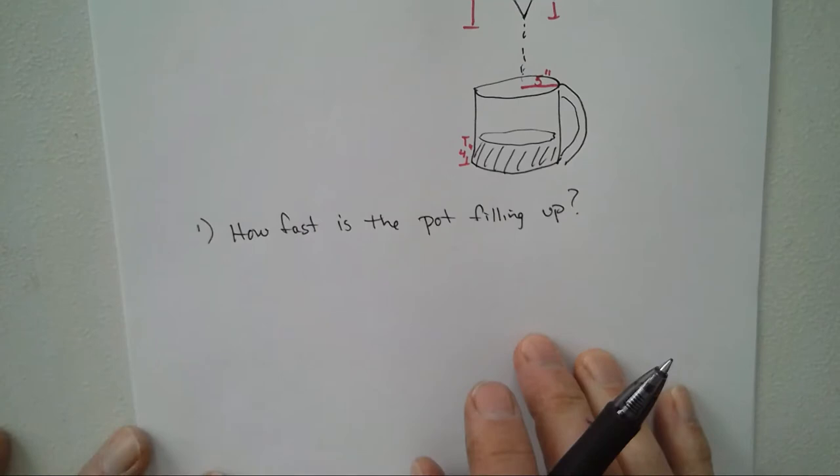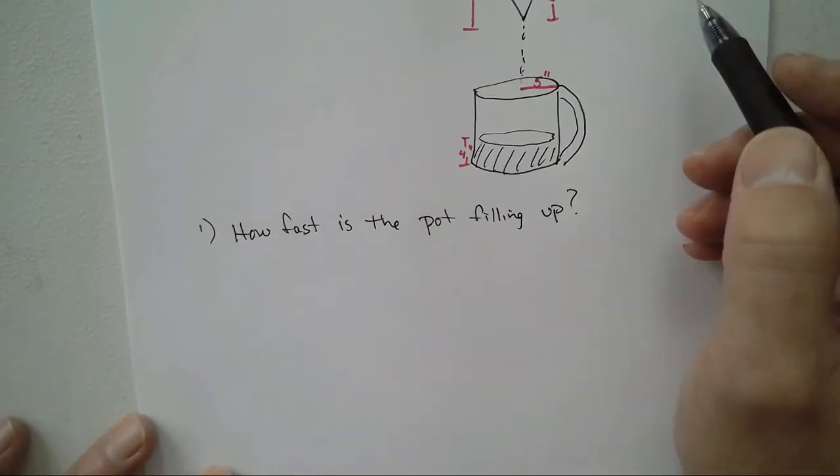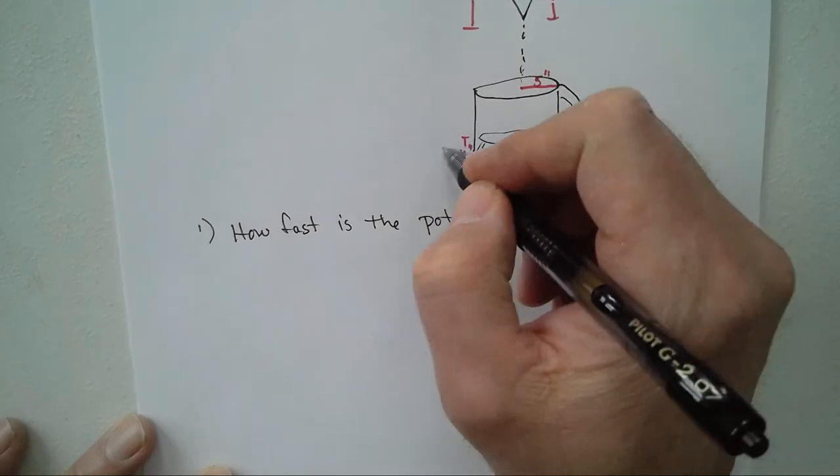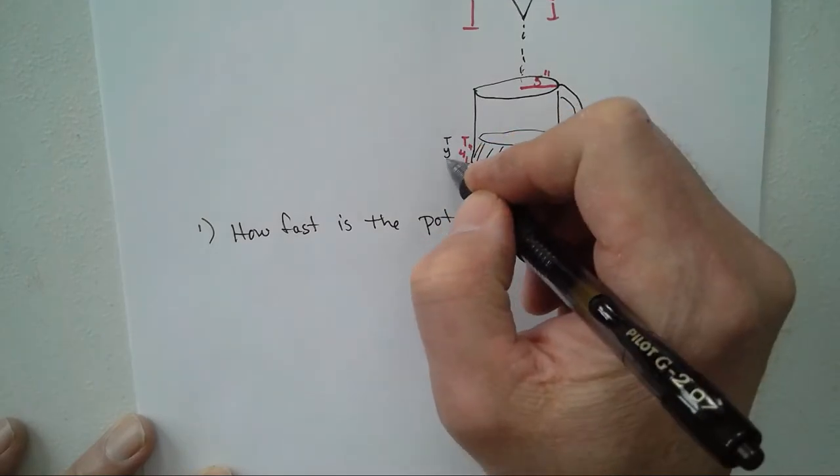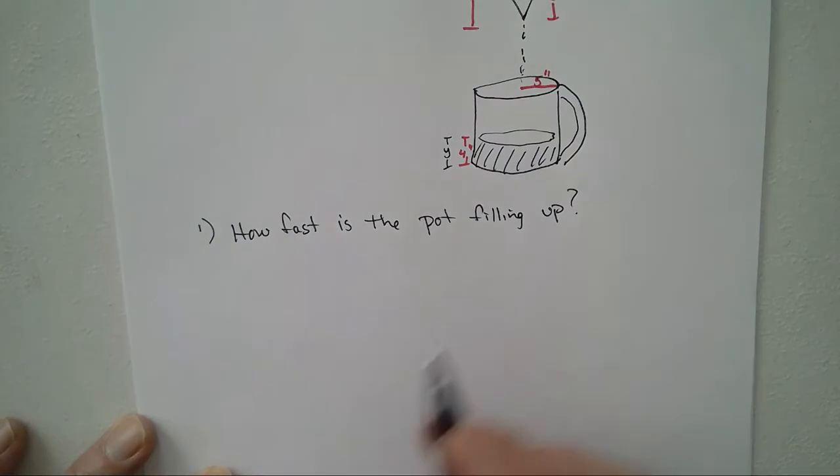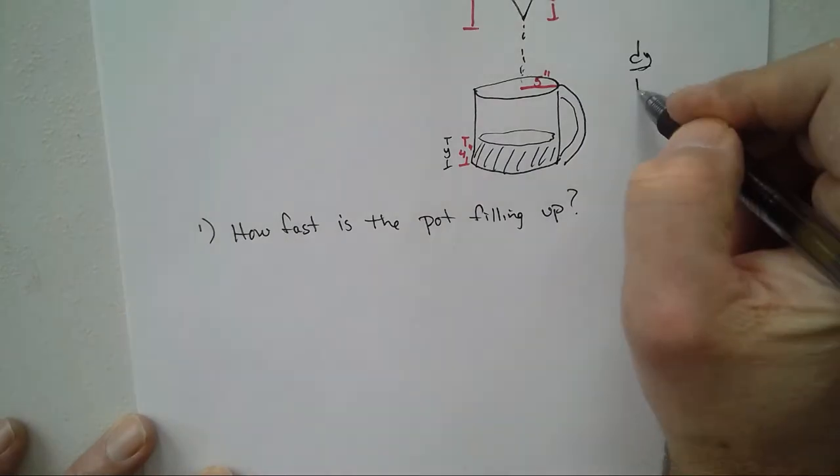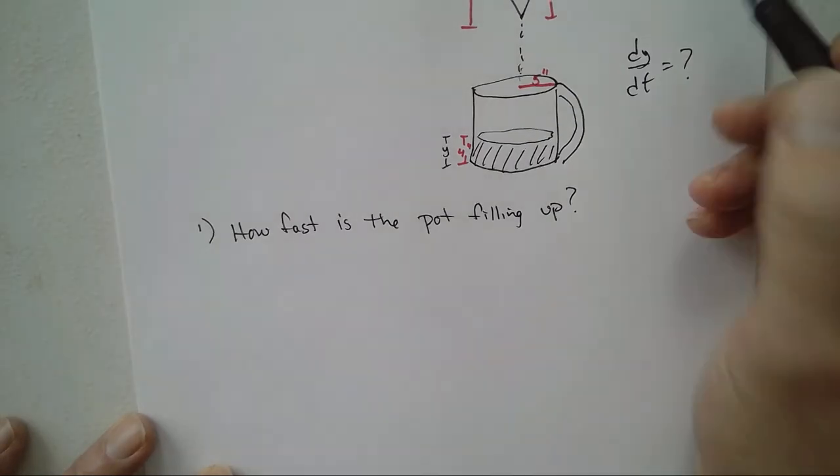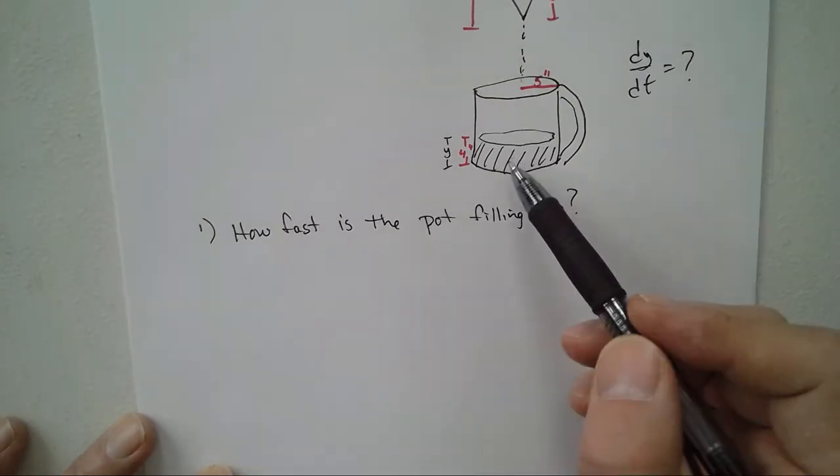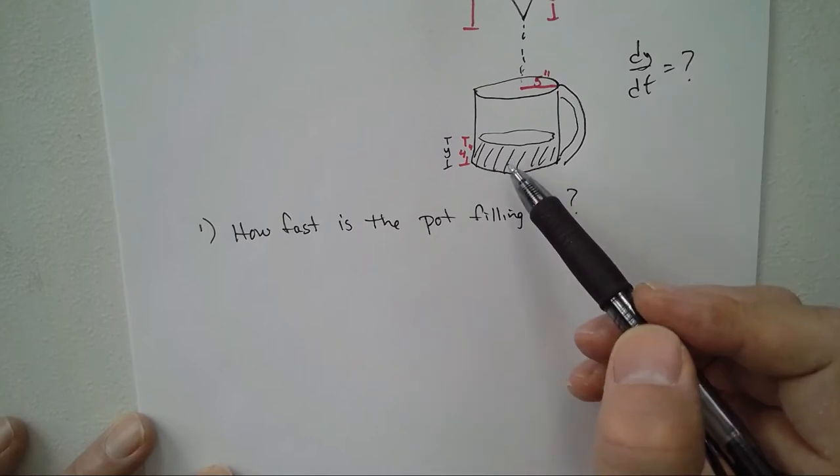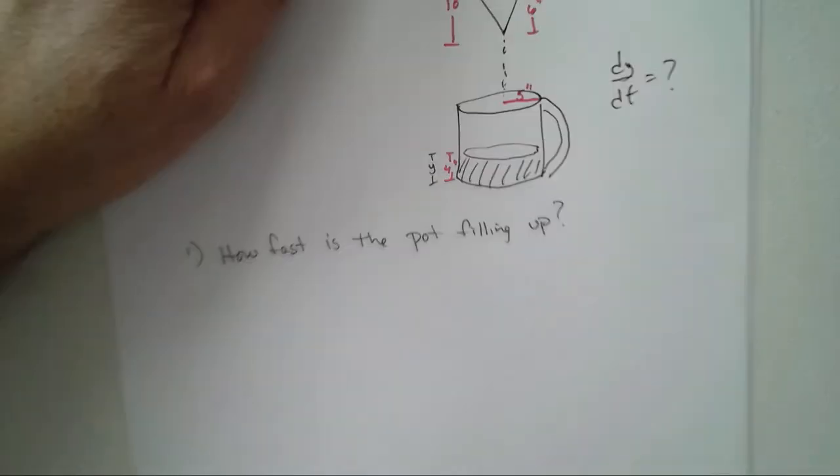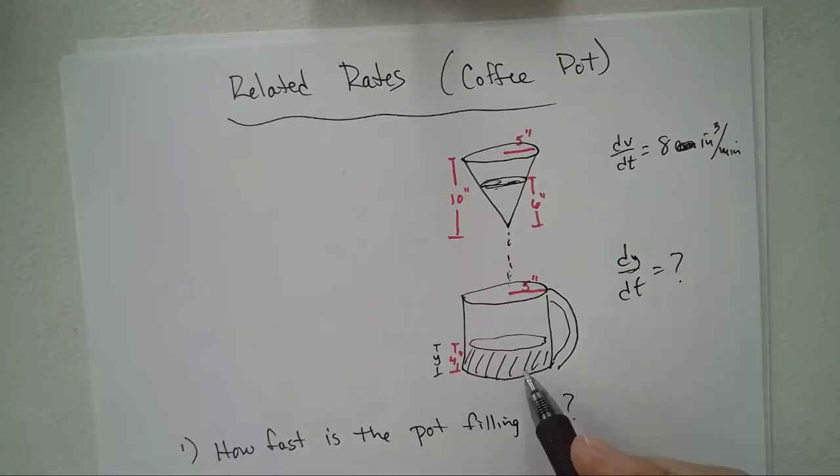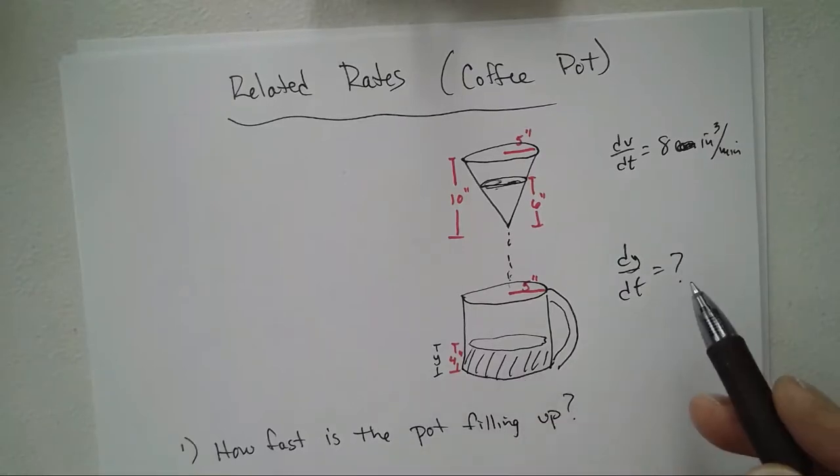Alright, so we are looking for, we'll call it y, the distance right there is y. So we're looking for dy/dt. We know that dV/dt is 8 and it's positive because this is filling up. Okay, so I think we have everything labeled.